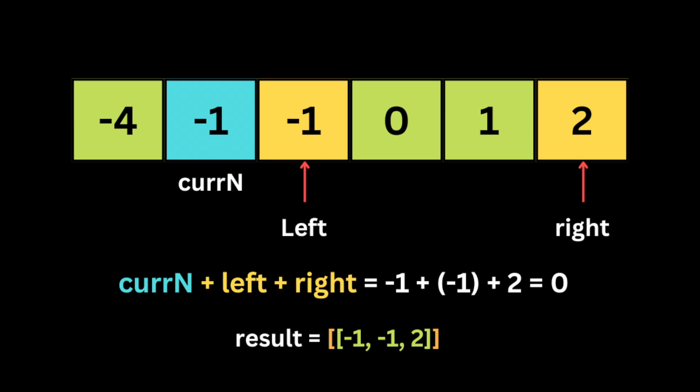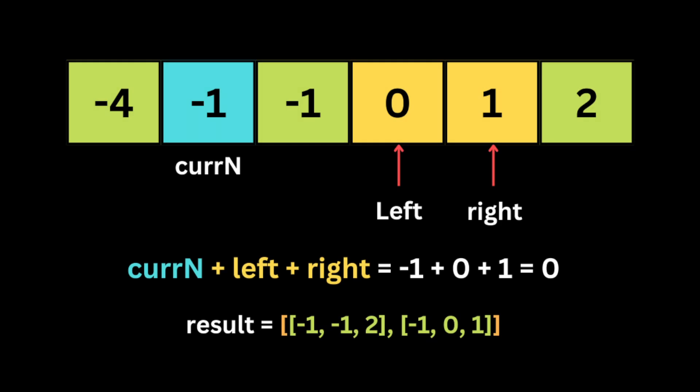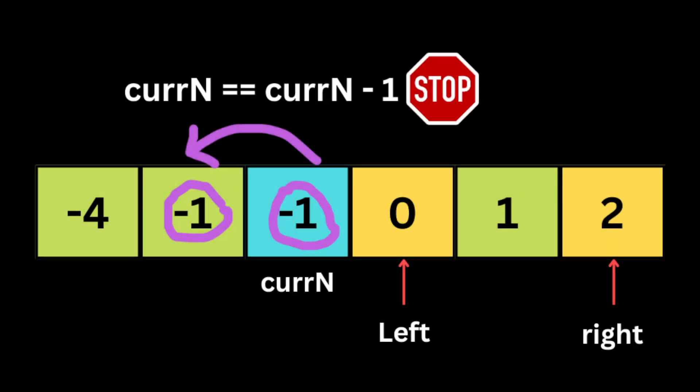The current number becomes minus one. We sum up the left and right pointer values plus the current number: minus one plus two plus minus one equals zero — the total equals the target. We push the current number minus one, the left value minus one, and the right value two into the result array. After that we move the left pointer to the next number zero and the right pointer to the previous number. The total is zero, so we push minus one, zero, and one into the result array, then move to the next iteration when the left and right pointers meet.